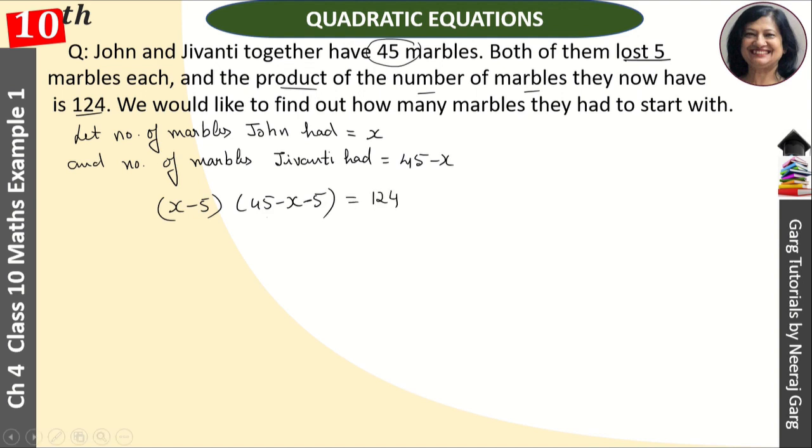This has become an equation. We have to solve it. So here we have x minus 5. And this has become 40 minus x is equal to 124. We will open the bracket. So this has become x into 40, 40x minus x square minus 200 plus 5x.